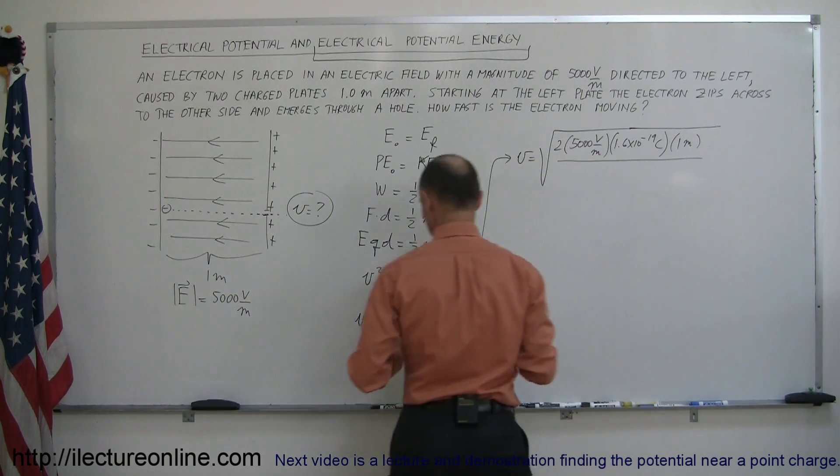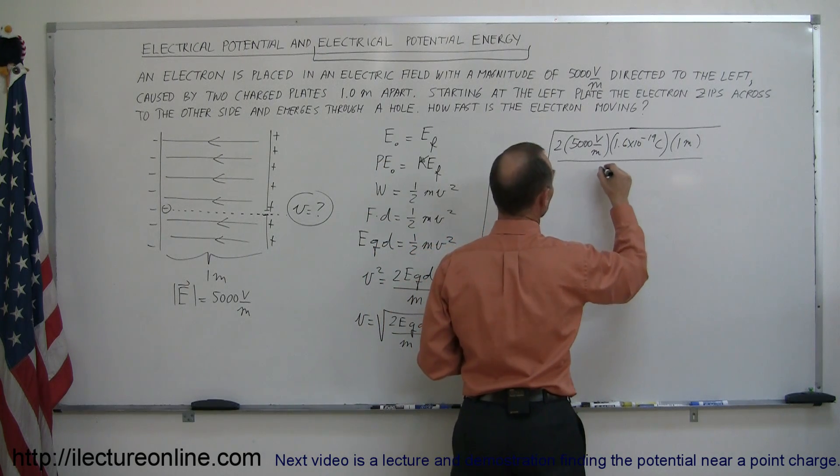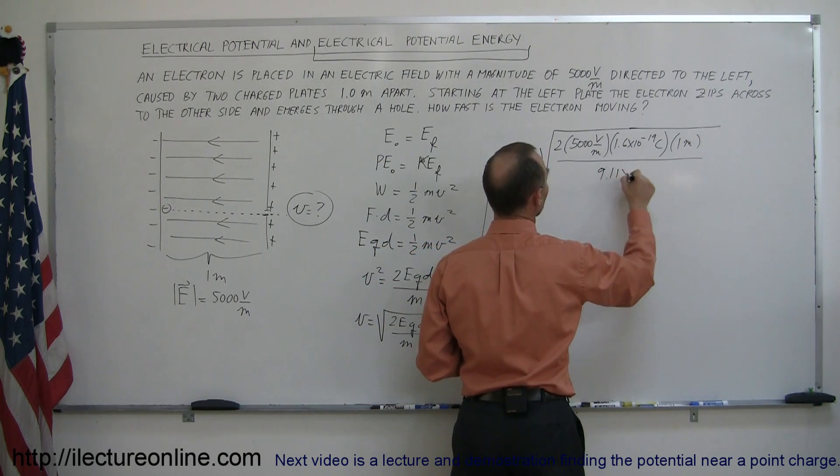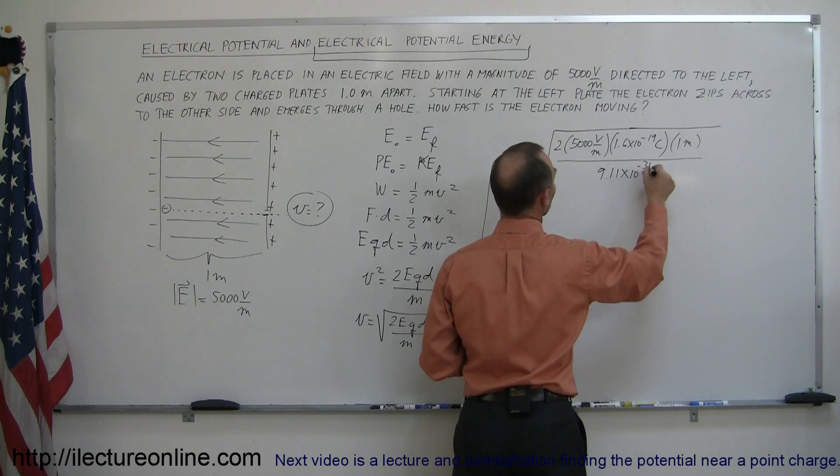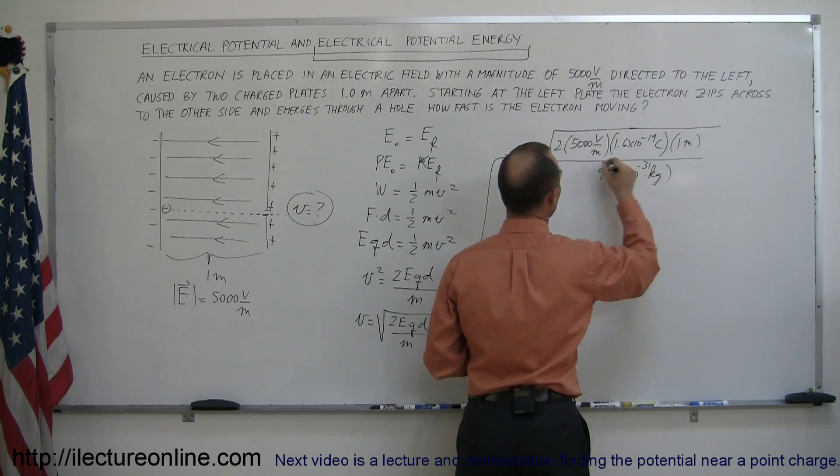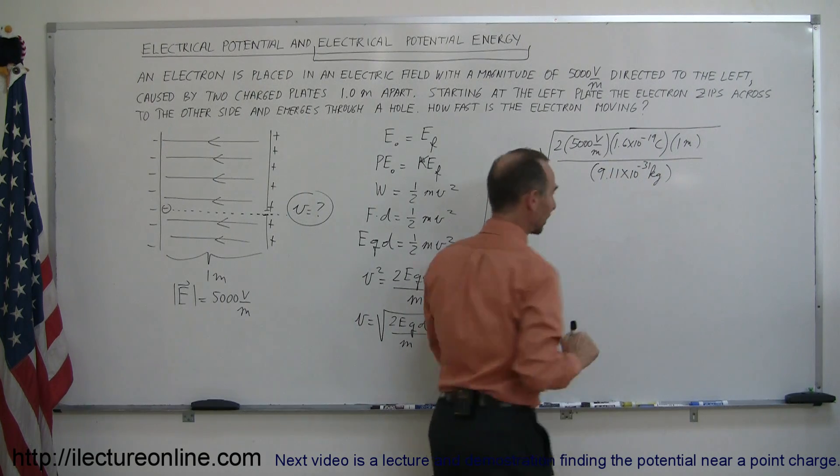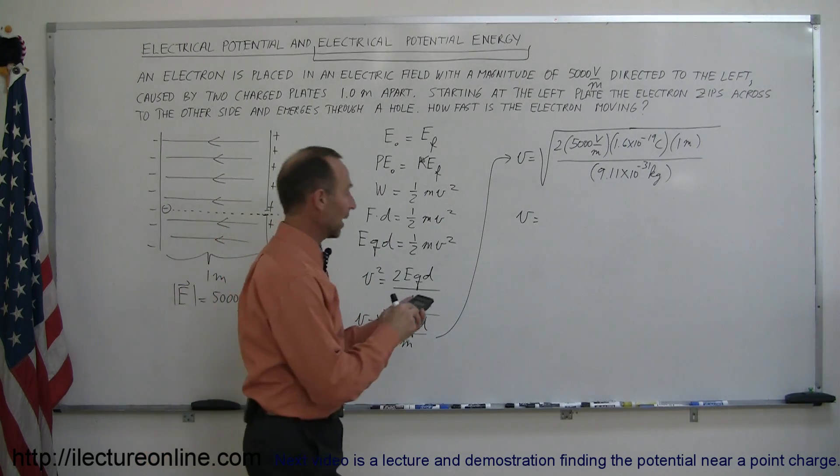and then we divide the whole thing by the mass of the electron which if I remember right is 9.11 times 10 to the minus 31 kilograms. All right let's go ahead and grab our calculator, put those numbers in there and see what we get.